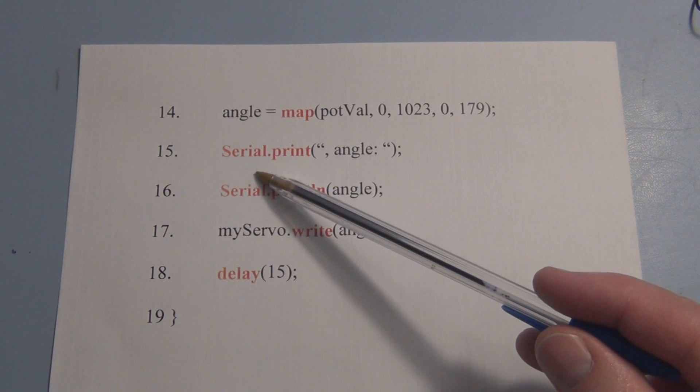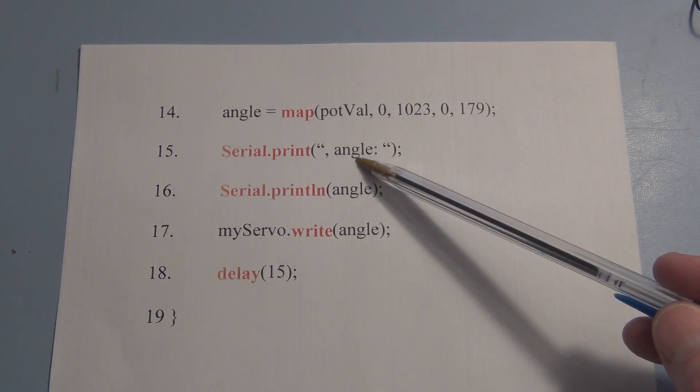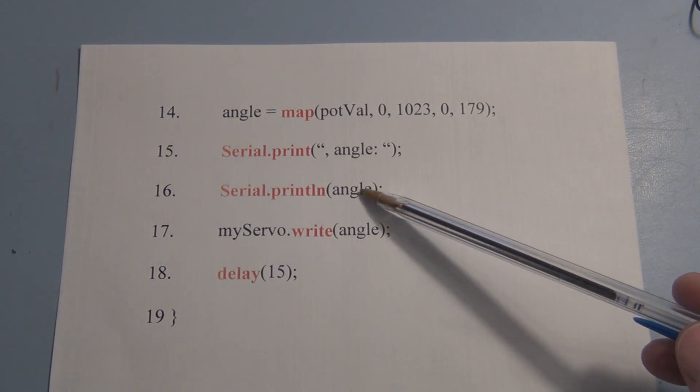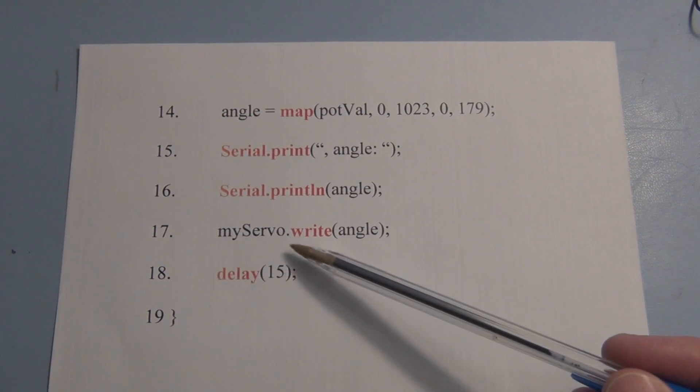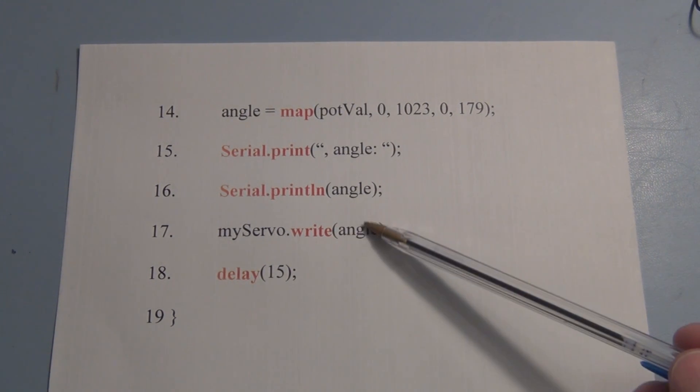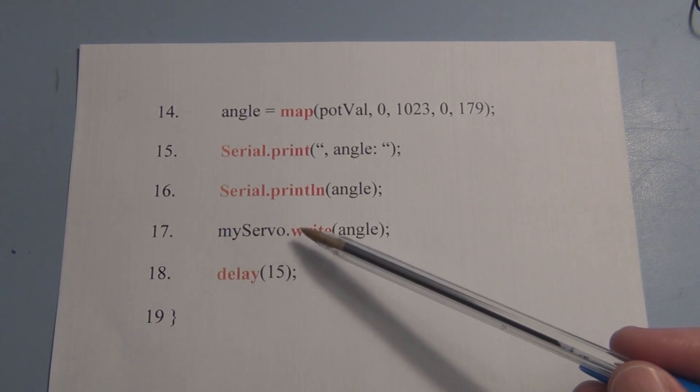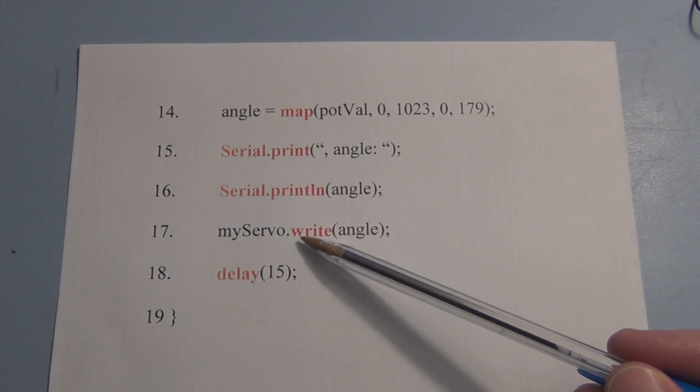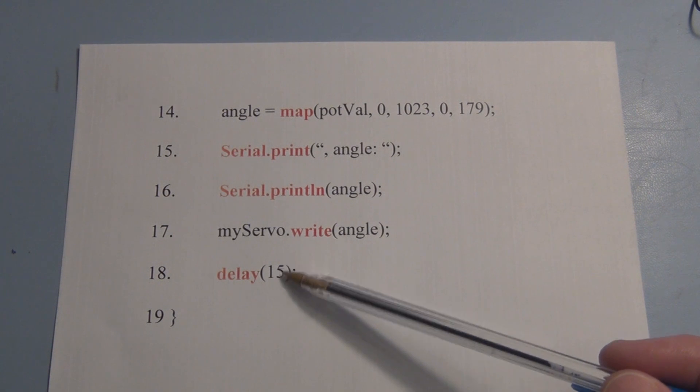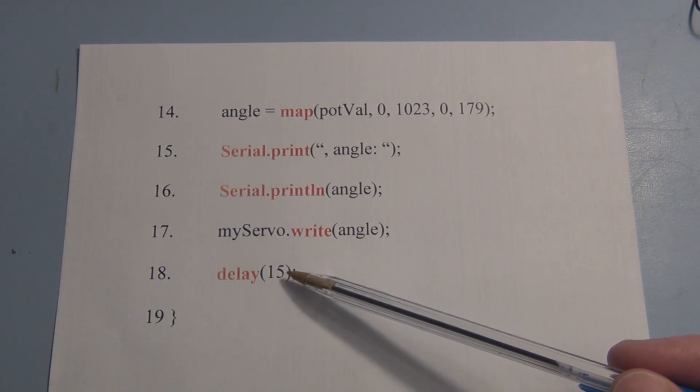Next we're going to Serial.print text angle, Serial.print new line, the value that's in angle. The next command myServo.write(angle) will send this angle number to pin 9 to control the servo. Now because we're dealing with a mechanical device we're putting in a delay here of 15 to give the servo time to move to its new position.